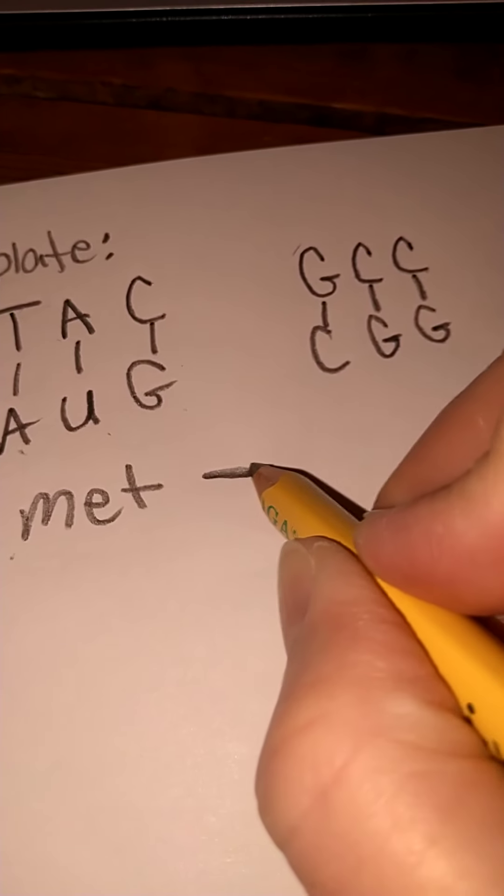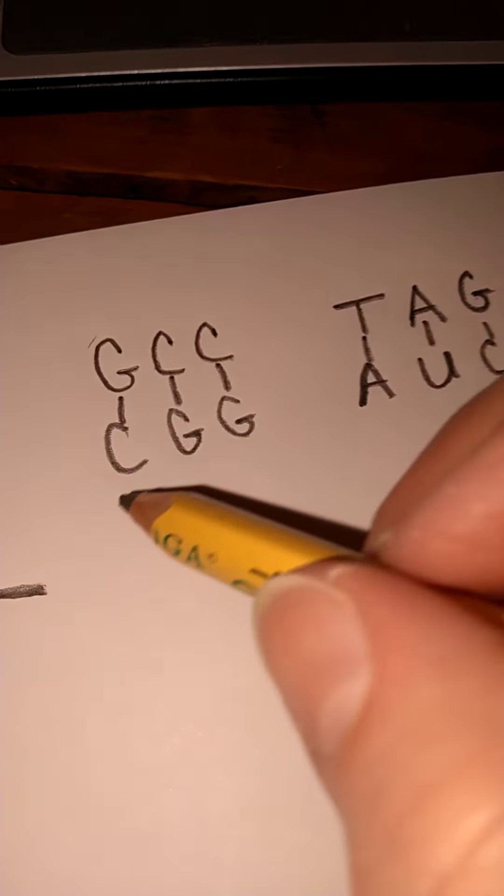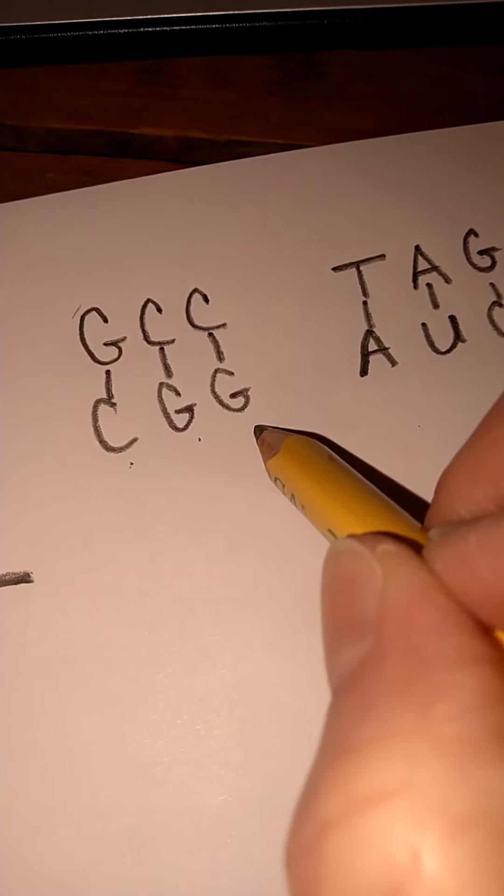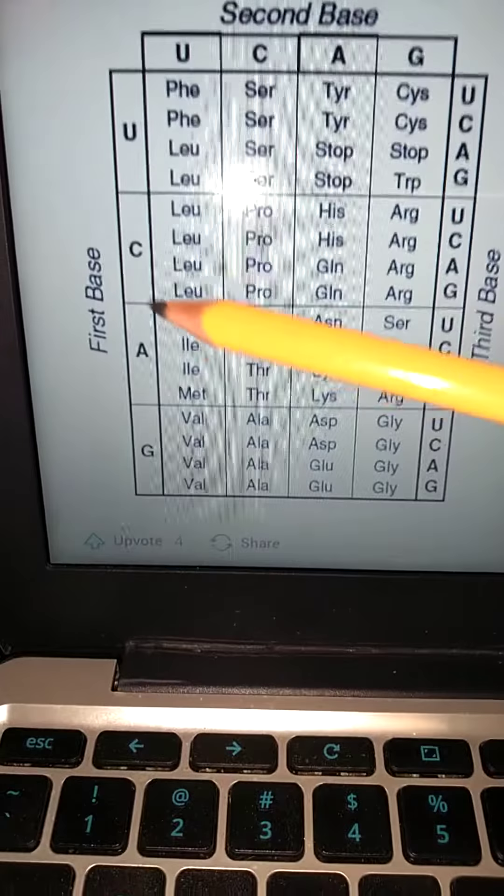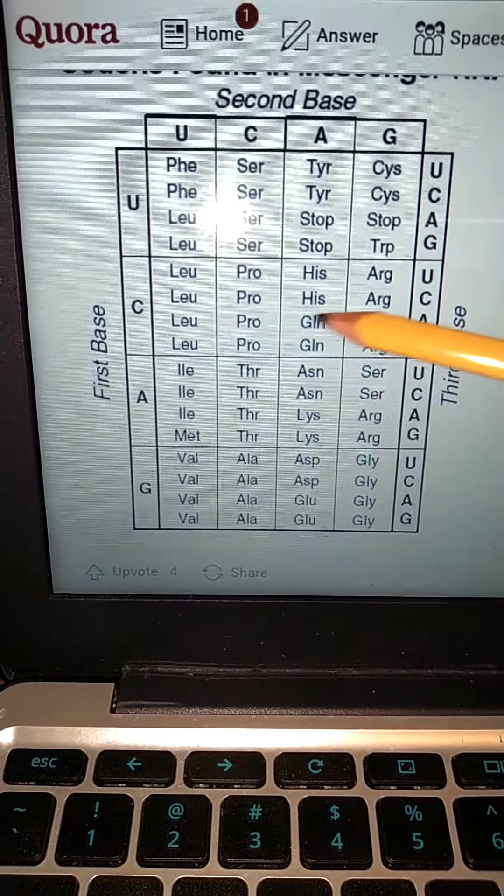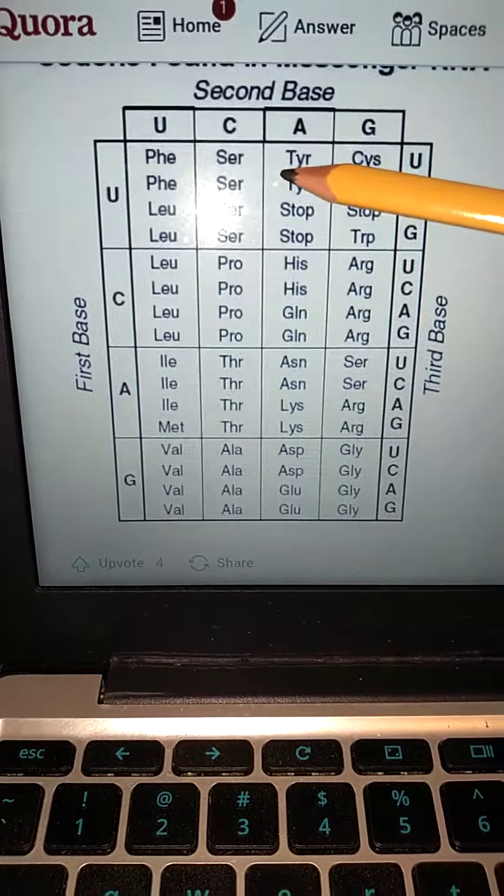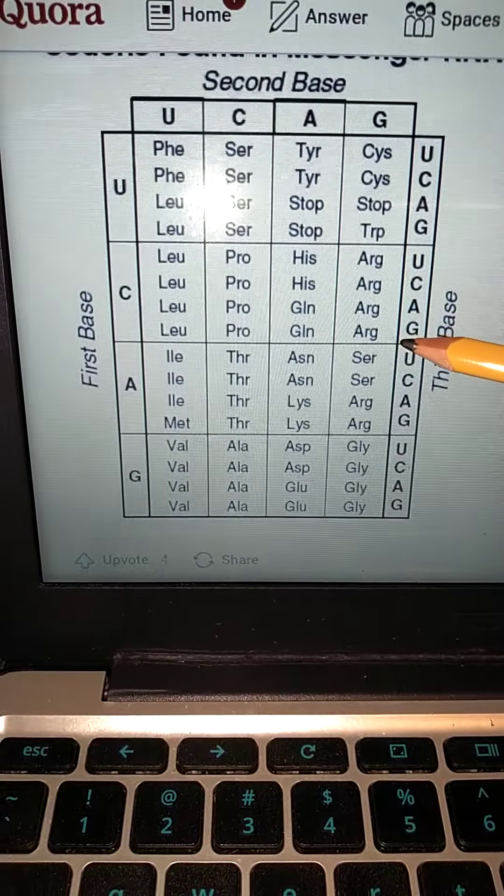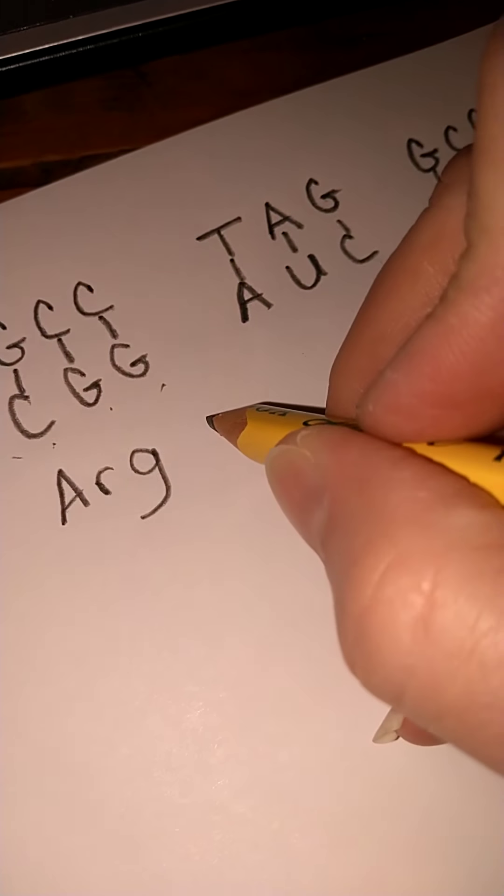This will be a peptide bond going to our next amino acid, which is coded for by C, G, G. So we'll take our C, so it's going to be in this part, G, which is right here, so it's going to be right here in this box, and then G. So arginine would be our next one, A, R, G. A, R, G, and then it's going to have a peptide bond joining it to the next one.